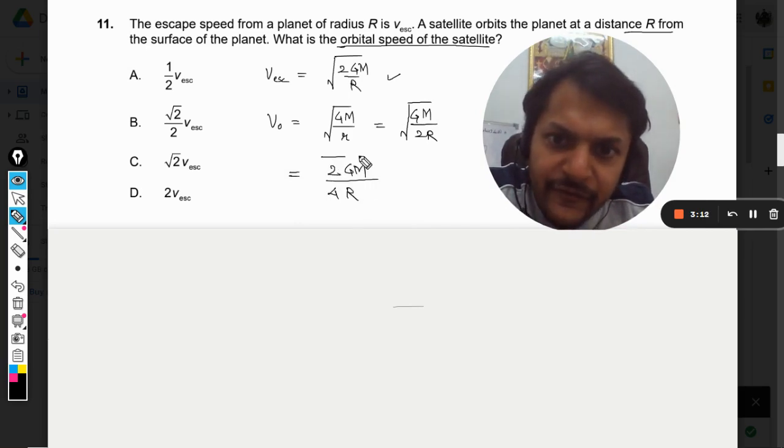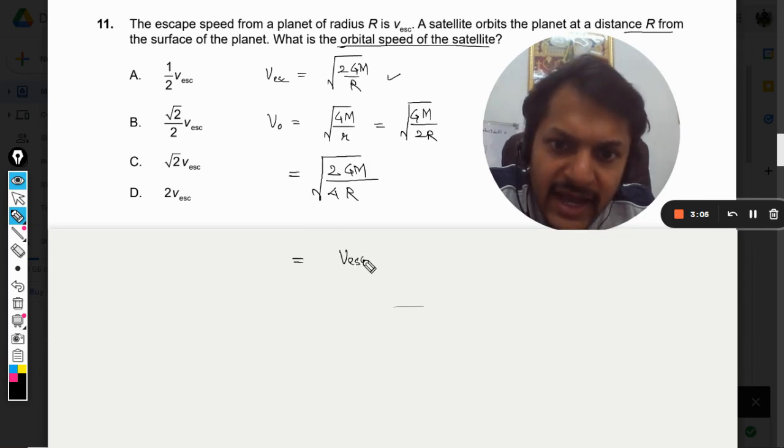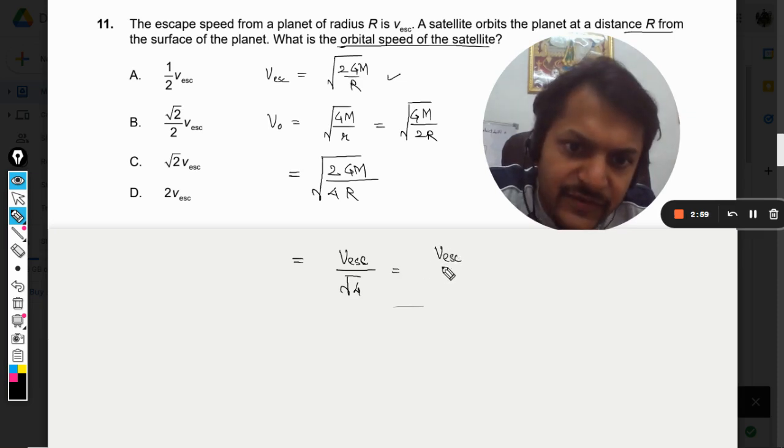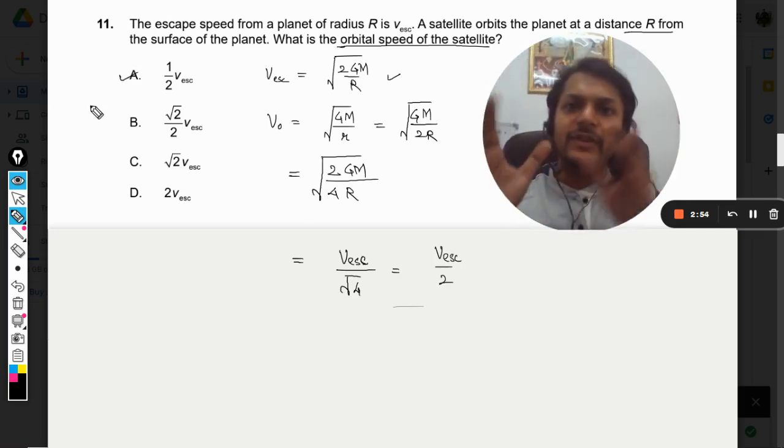This part will become equal to V_escape and square root of 4 will be left here. So our answer is V_esc divided by 2. Our answer will be A.